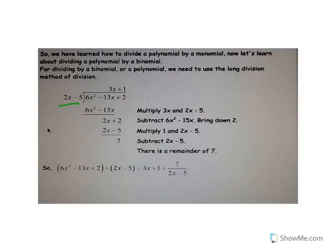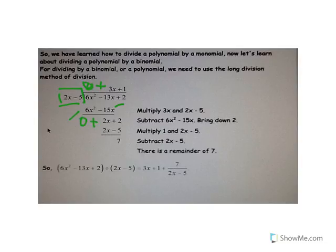I'm trying to change 2x minus 5 into 6x squared minus 13x. I can't do that with just the first term, so I put a zero up there. But if I multiply the whole term by 3x, I get 6x squared — that's what I need to get rid of the first term before moving on. So 3x times 2x equals 6x squared, and 3x times minus 5 gives negative 15x. That gives zero here.